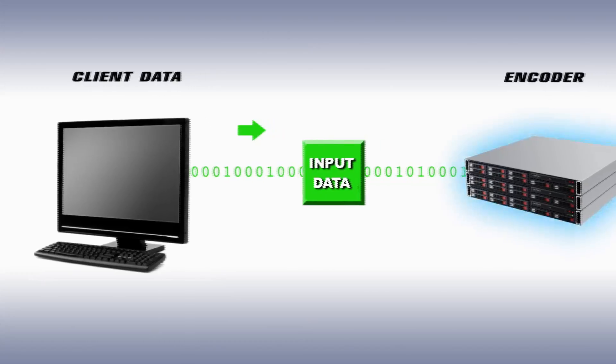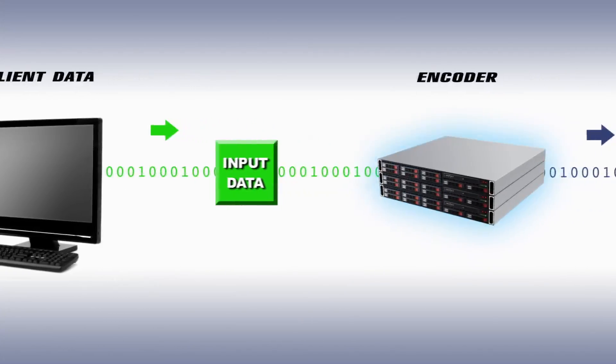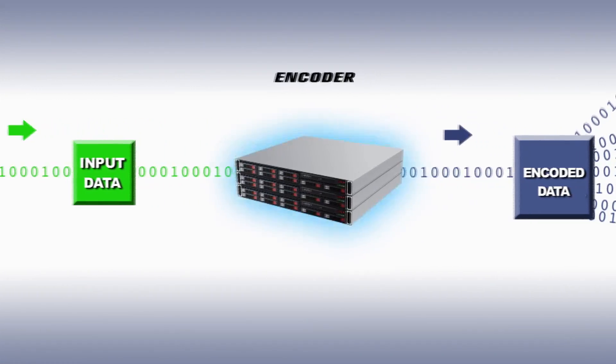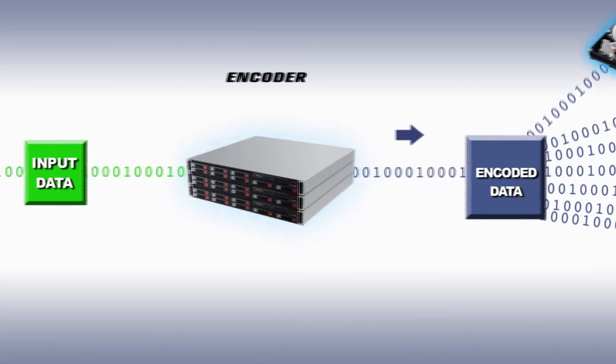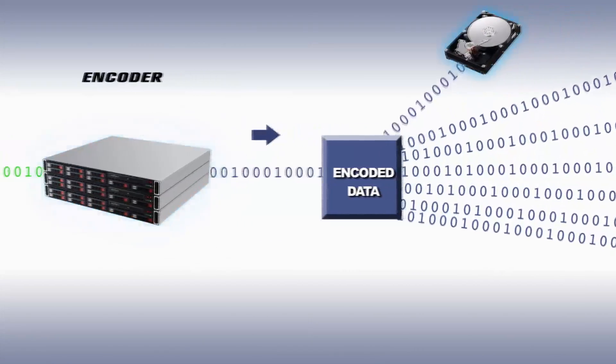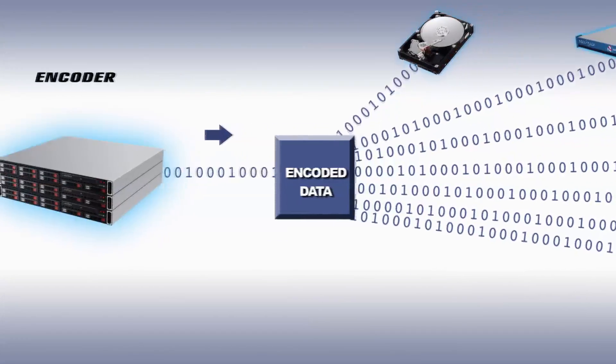How does an object get stored in AmplaStore? An application sends some kind of object that they want to store — a file, typically a media file or a document. It's sent to a controller, which receives it over one of the interfaces: a REST interface or a language API call.